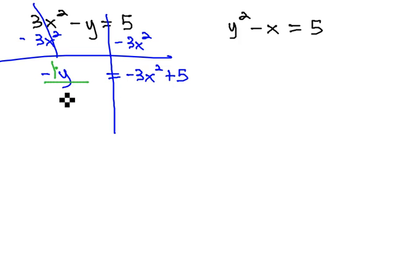Still have to clear the negative. That really is negative 1 times y, so we'll divide each term by negative 1, and that gives us y is equal to positive 3x squared minus 5.